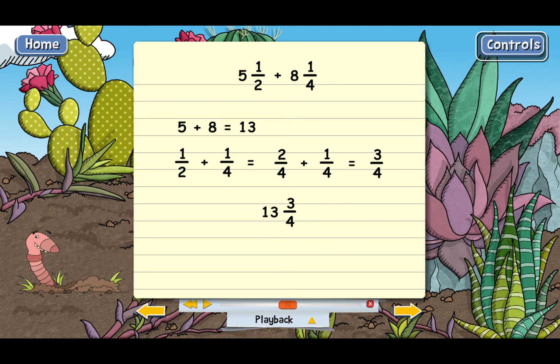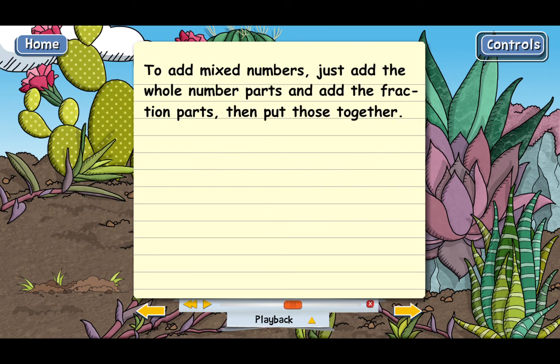It must have taken the clipper ship 13 and three fourths days to reach both destinations. The main point is that to add mixed numbers, just add the whole number parts and add the fraction parts and then put those together to create a new mixed number.